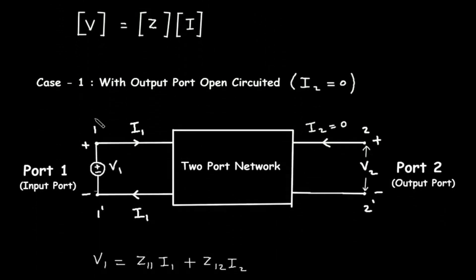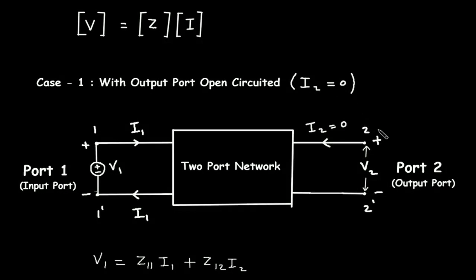Now, there will be two conditions or two cases. In case 1, we will consider the output port as open circuited, and in case 2, we will consider the input port as open circuited. So, case 1 with output port open circuited. When the output port is open circuited, I2 will be equal to 0.